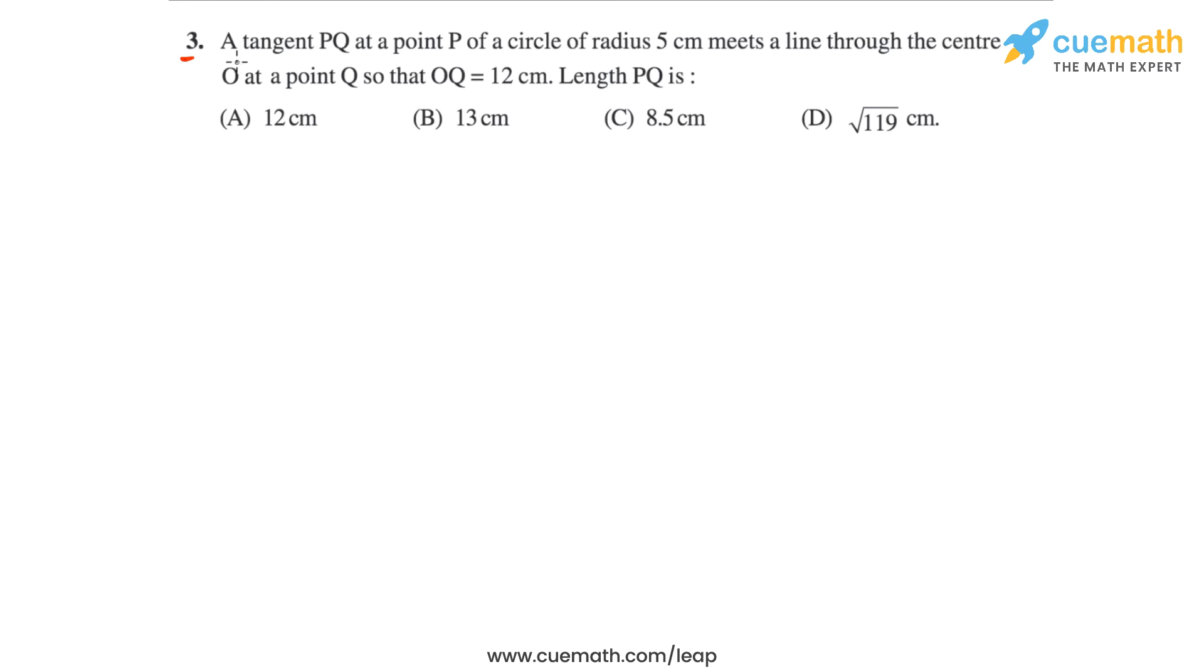Question 3 of this exercise says, a tangent PQ at a point P of a circle of radius 5 centimeters meets a line through the center O at a point Q such that OQ is equal to 12 centimeters. So let's first draw a figure corresponding to this statement before we go forward and understand what the question is asking us.